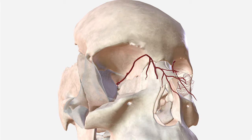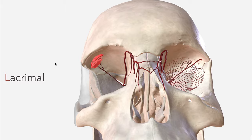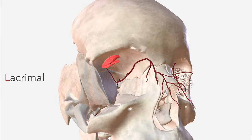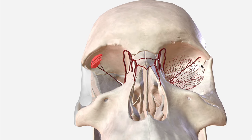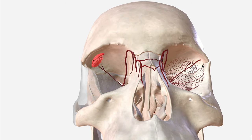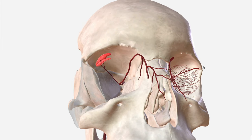Next up we have the lacrimal artery, which as its name suggests supplies the lacrimal gland with its arterial blood. There's the lacrimal gland, and there's the lacrimal artery departing quite early in the course of the ophthalmic, moving superior-laterally toward the lacrimal gland and also supplying the eyelids and the conjunctiva as it does so.